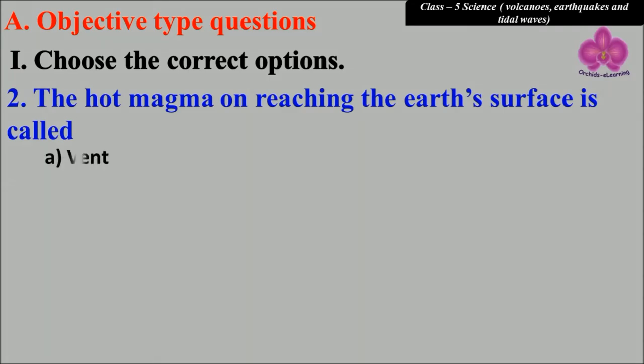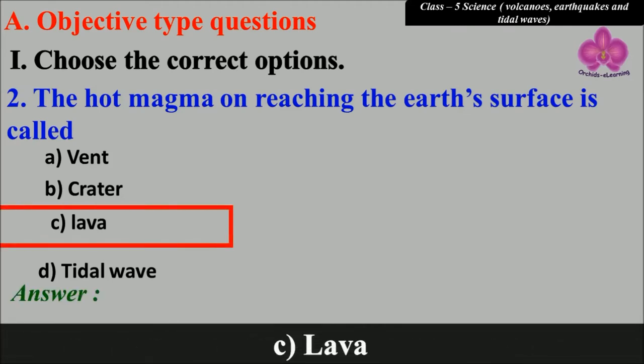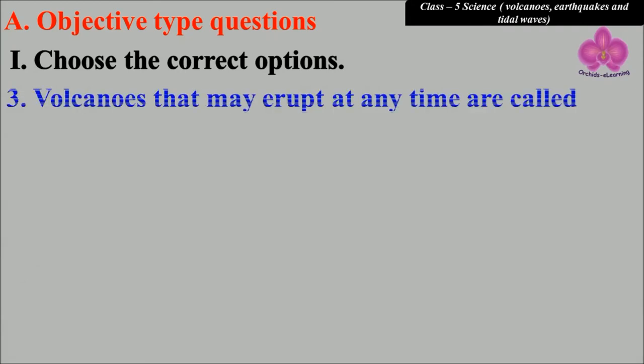is called vent, crater, lava, and tidal wave. What do we call the hot magma on reaching the earth's surface? The answer is c) lava. Volcanoes that may erupt at any time are called, look at the options: a) active